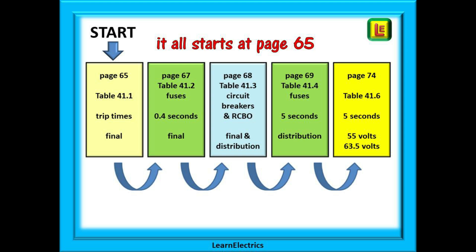Look at how this information flows. Page 65 is table 41.1 for disconnection times. Once you know the disconnection time, you can find the correct ZS table to use. Turn the page and you have table 41.2 for ZS values for fuses in 0.4 second final circuits. Turn the page again and there are the ZS values for circuit breakers and RCBOs in table 41.3. The ZS values in this table are for 0.4 second final circuits and for 5 second distribution circuits.